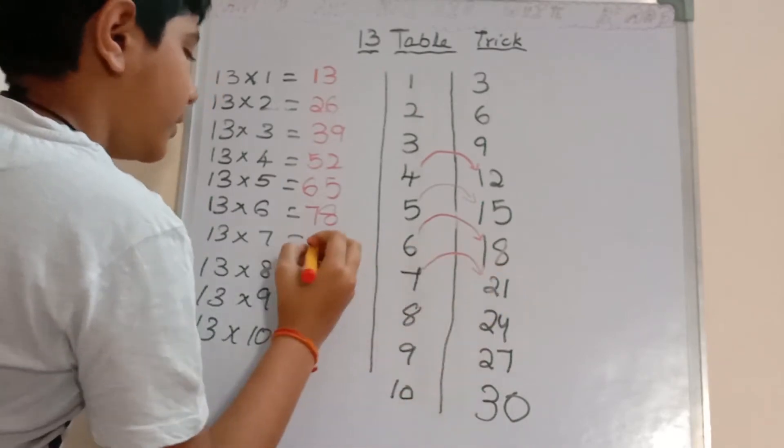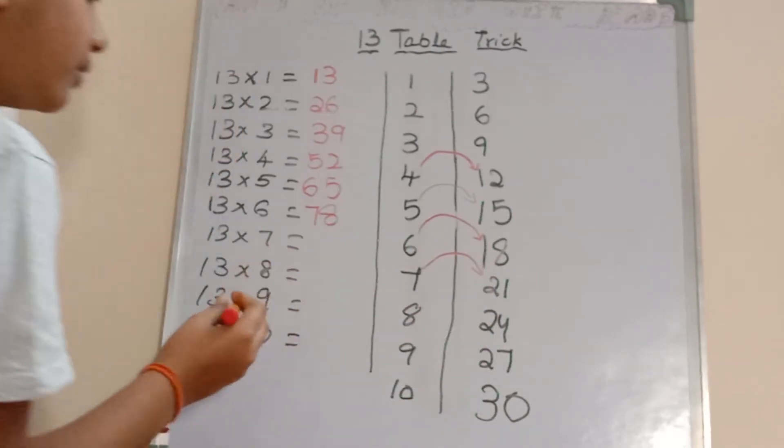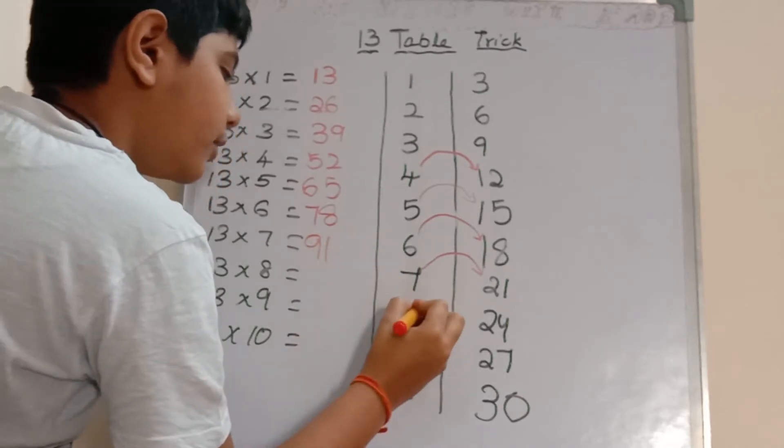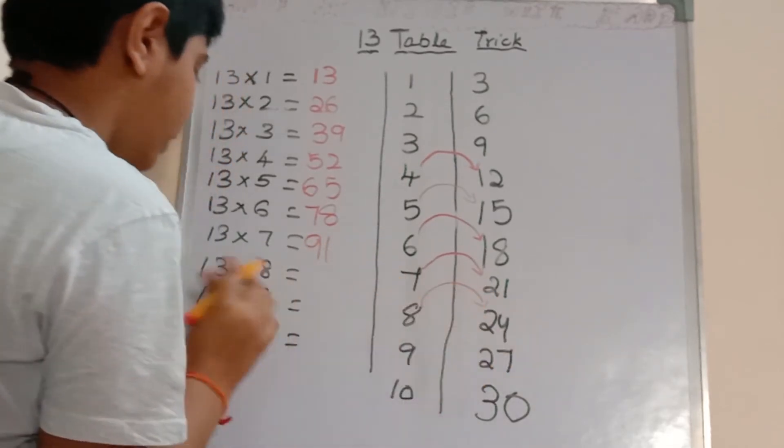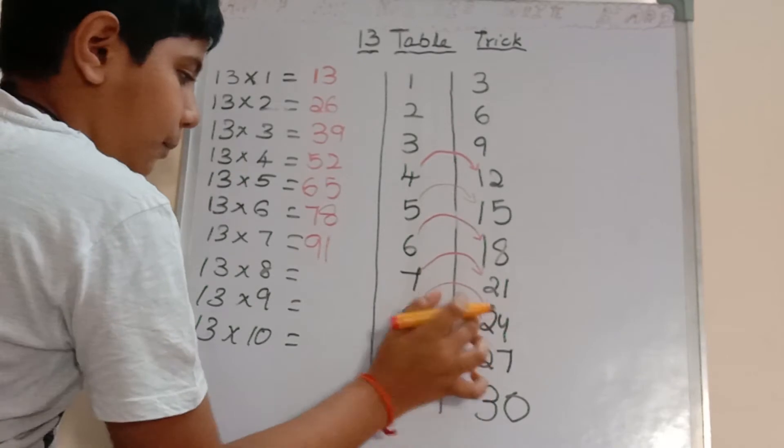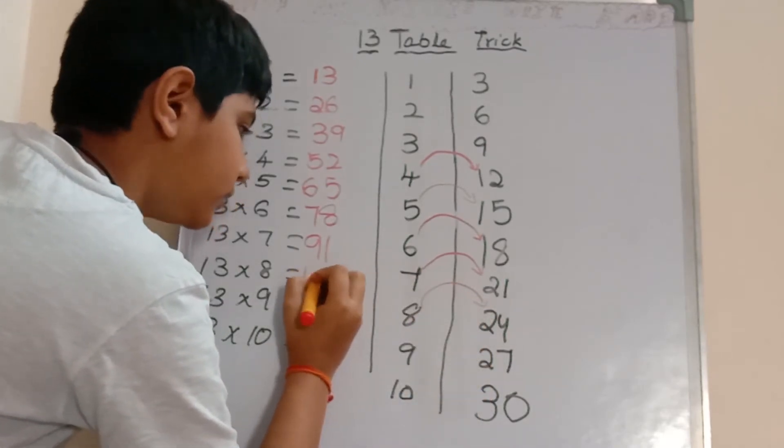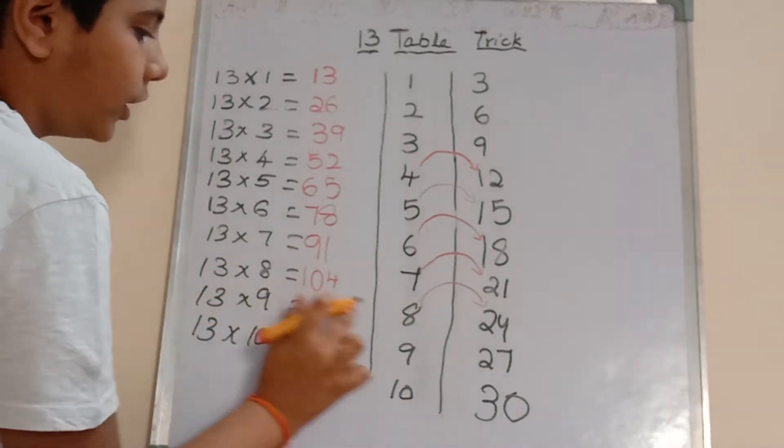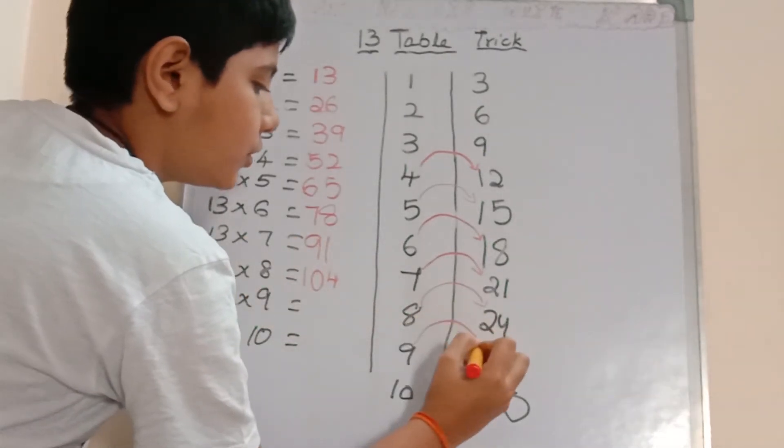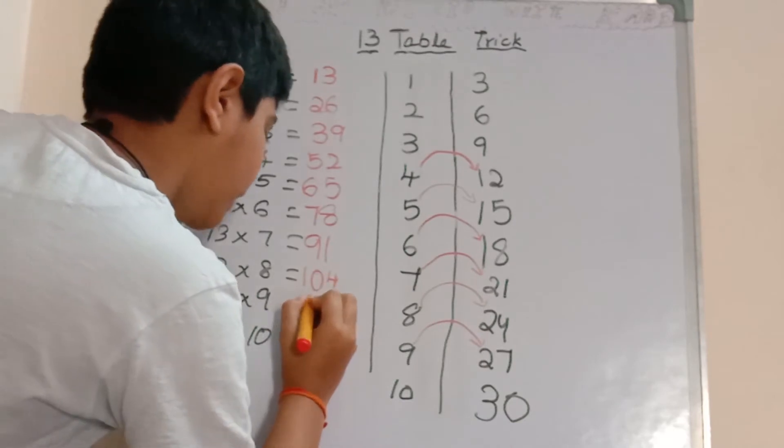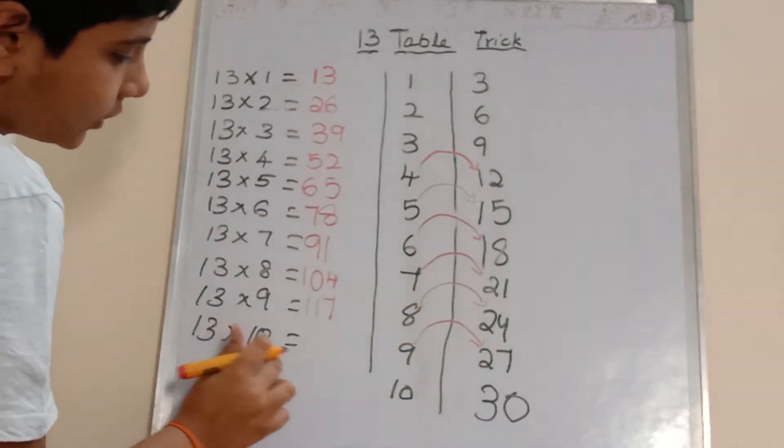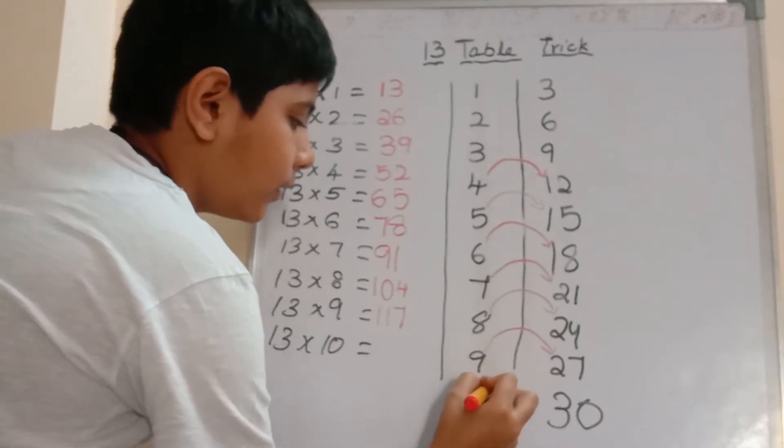7 plus 2 is 9, so 91. 13 into 8: 8 plus 1 is 10, so 104. 13 into 9: 9 plus 2 is 11, so 117. 13 into 10: 10 plus 3 is 13, so 130.